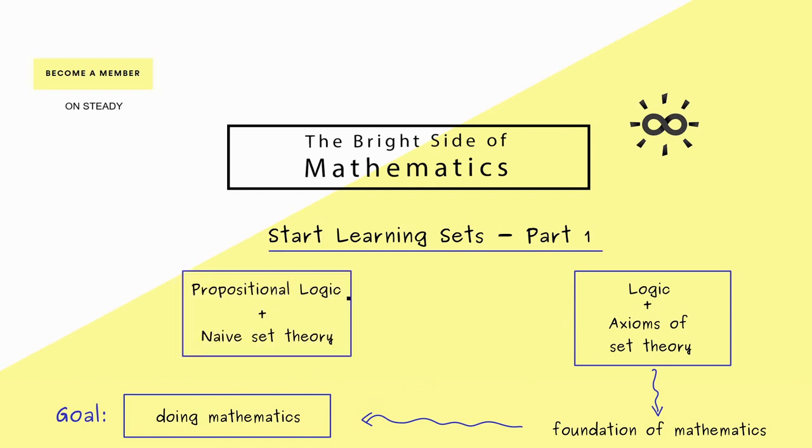On this path we just learn a little bit of propositional logic and something we call naive set theory. The name seems a little bit strange; we will just call it set theory. Indeed the only difference is that we don't write down all the axioms. With this and the propositional logic we learned in the last videos we can go to doing mathematics.